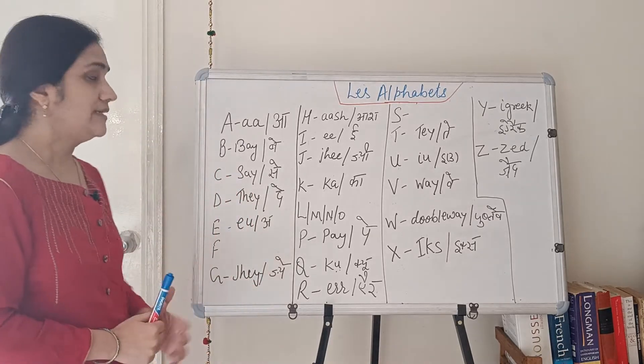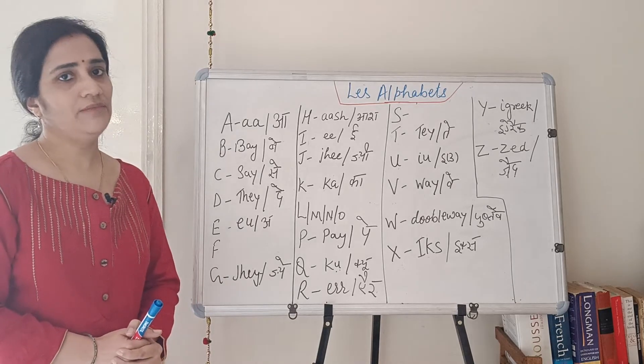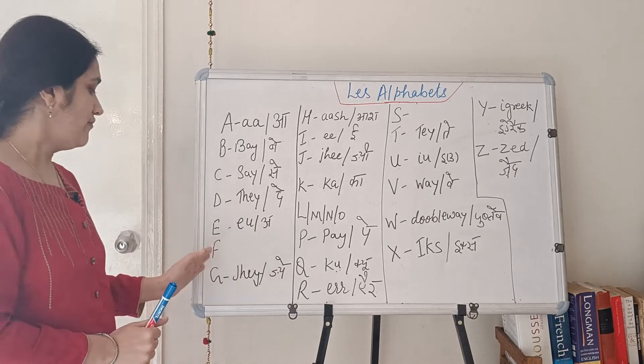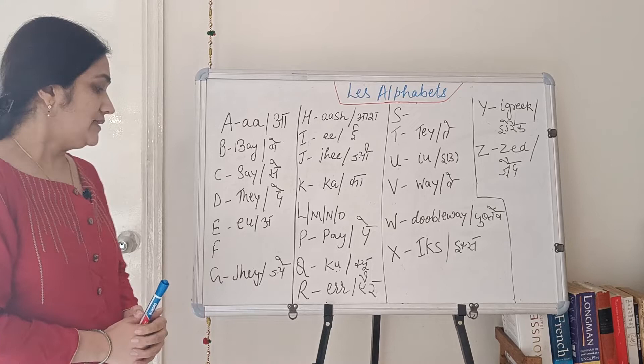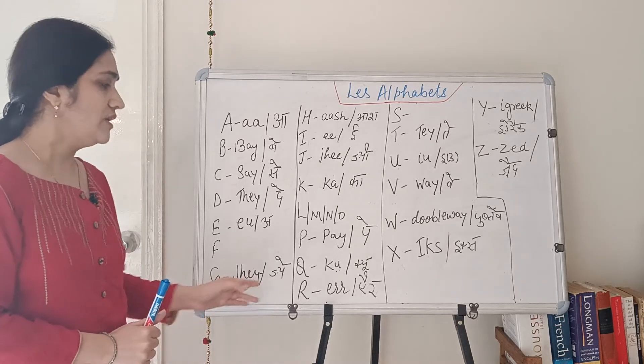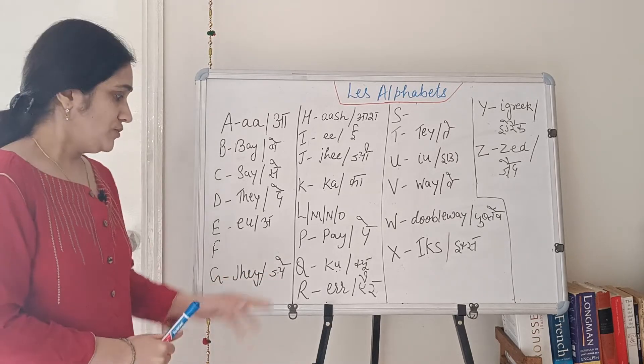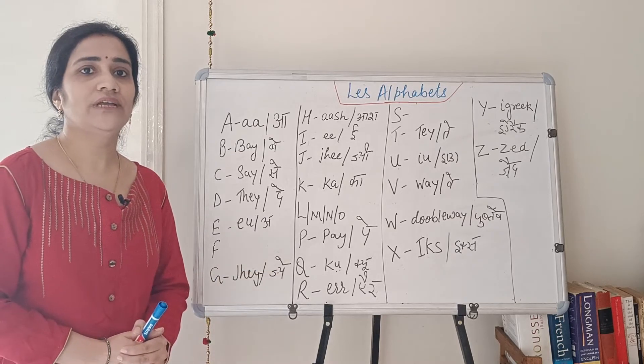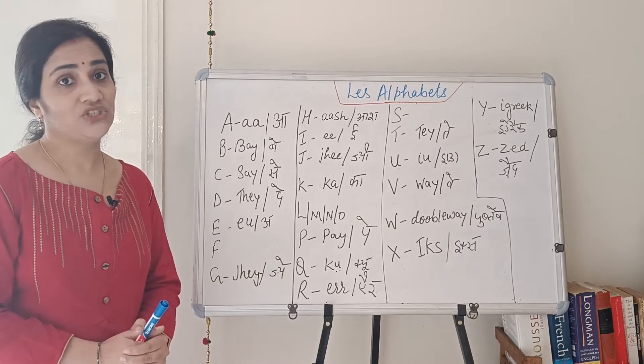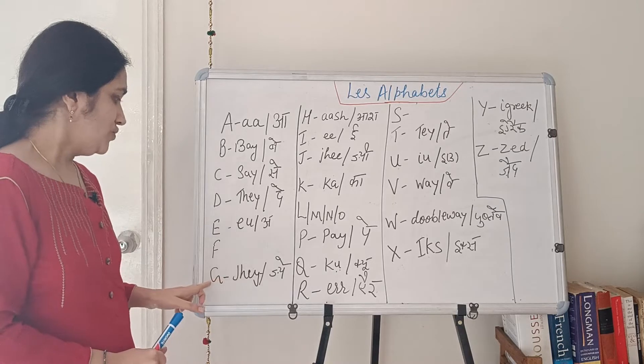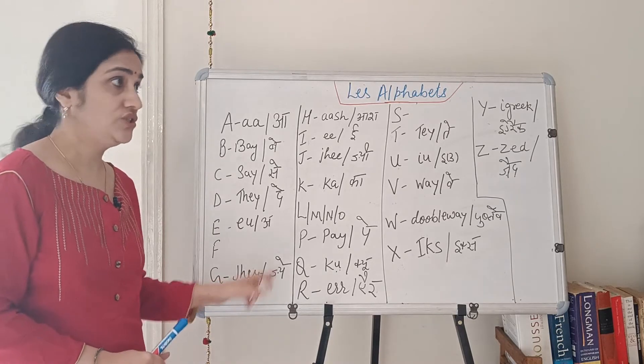Now the next letter is F, same as in English sound. F. Now the next letter is G. G sound J. So this sound is somewhat similar to the English word measure. J. So G sound J.